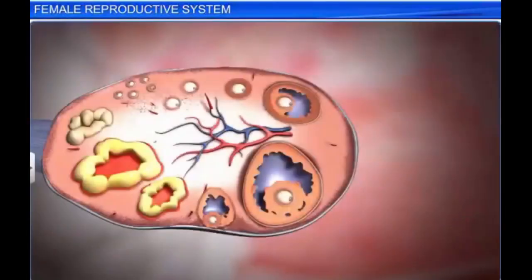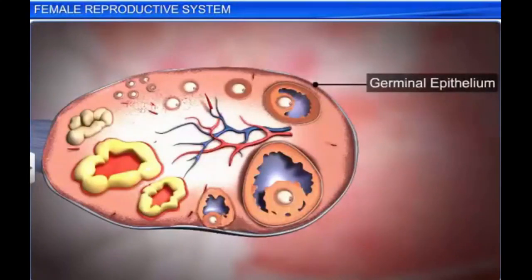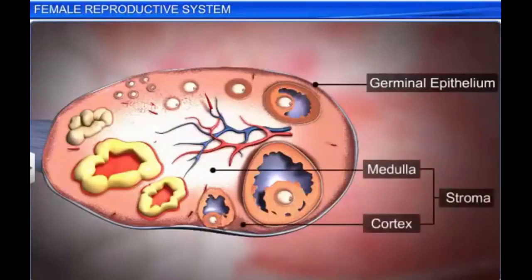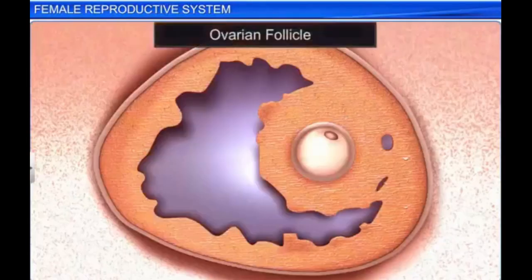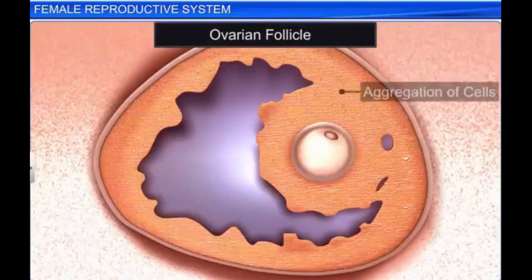Each ovary is covered by an outer thin layer called the germinal epithelium. The germinal epithelium encloses the ovarian stroma, which is further divided into the outer cortex and the inner medulla. The cortex consists of many ovarian follicles in different stages of development. The ovarian follicle is the basic unit of the female reproductive system, and is composed of roughly spherical aggregations of cells found in the ovary.